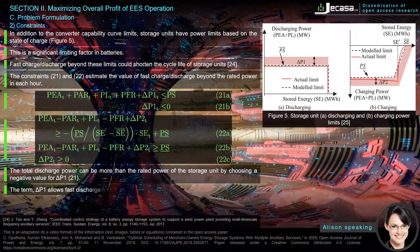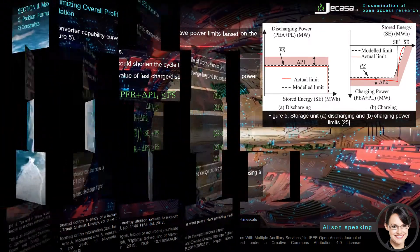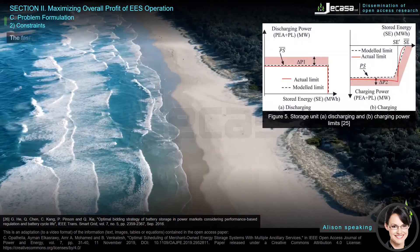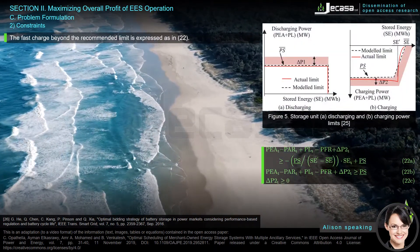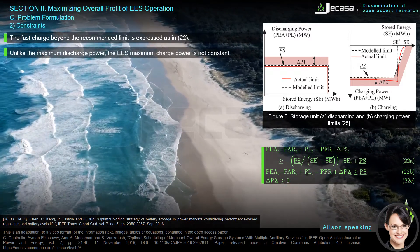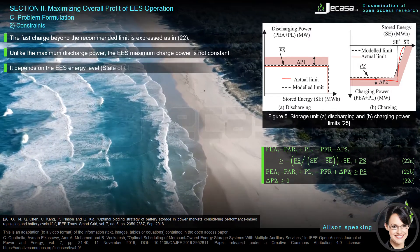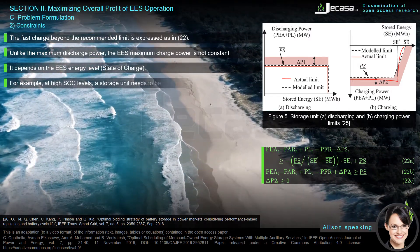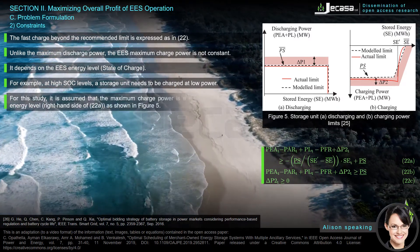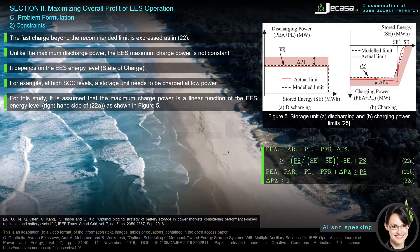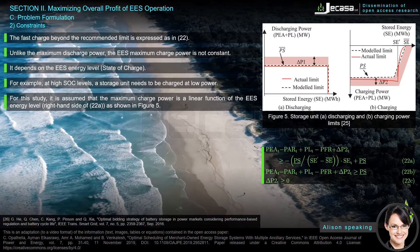The term delta P1 allows fast discharge higher than the rated power. The fast charge beyond the recommended limit is expressed in equation 22. Unlike the maximum discharge power, the EES maximum charge power is not constant — it depends on the EES energy level (state of charge). At high SoC levels, a storage unit needs to be charged at low power. The maximum charge power is a linear function of the EES energy level, as shown on the right-hand side of equation 22a and in Figure 5.